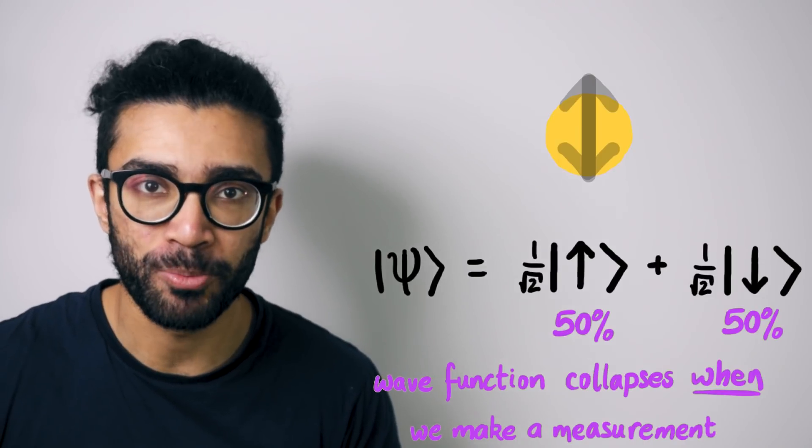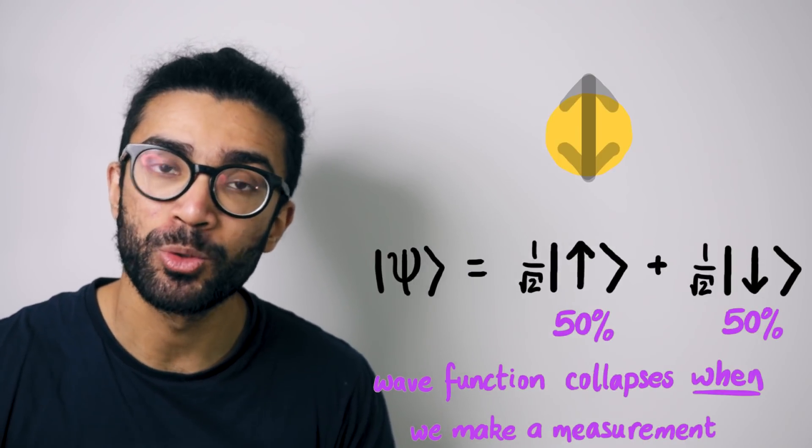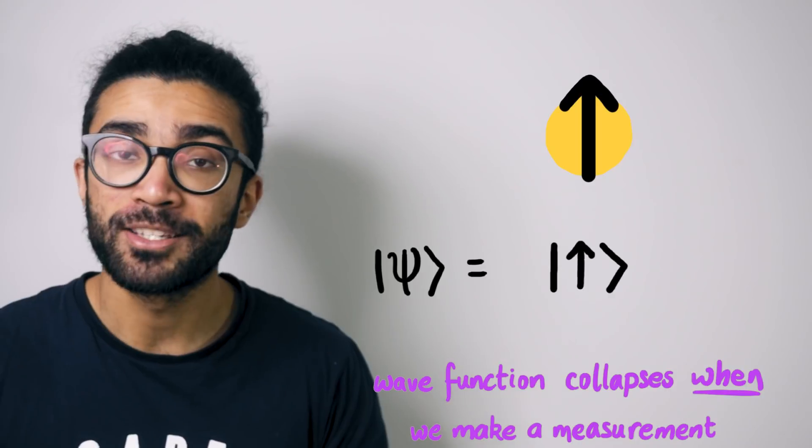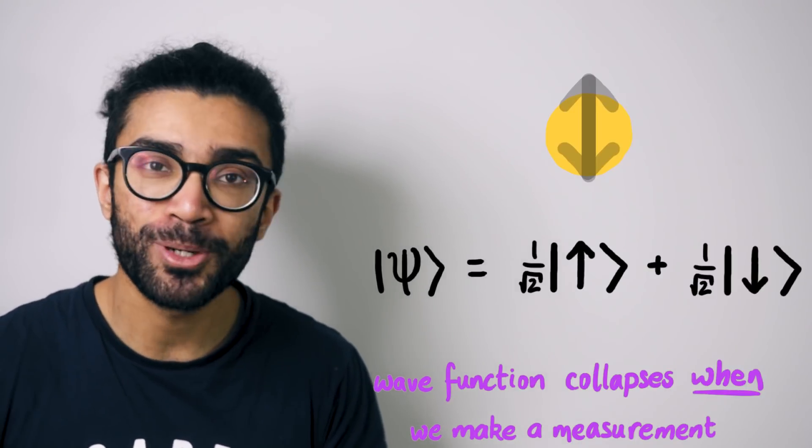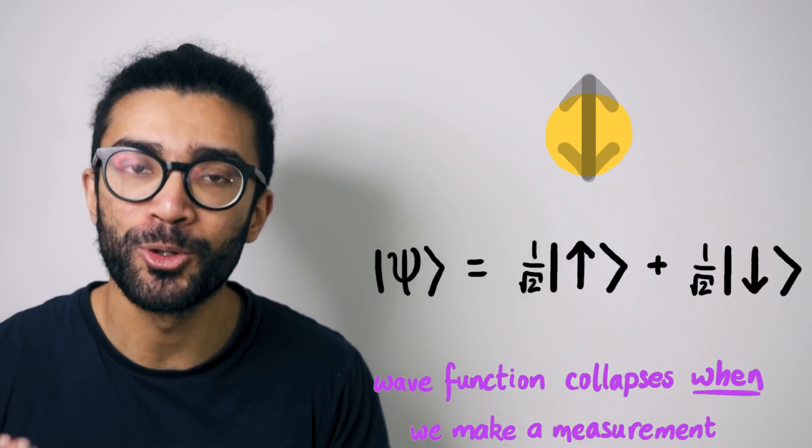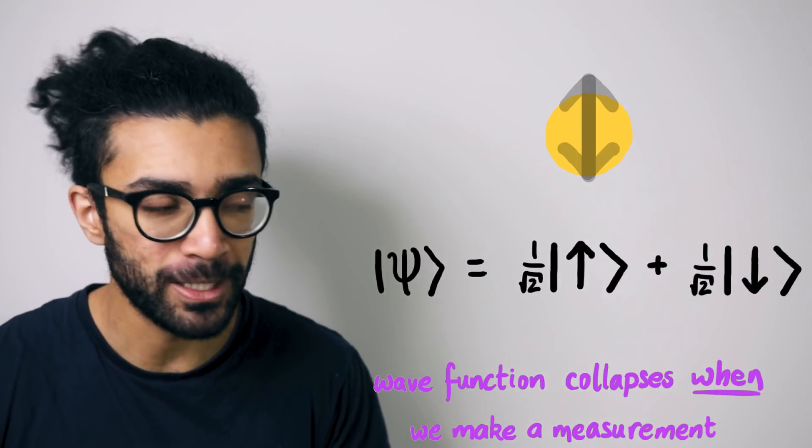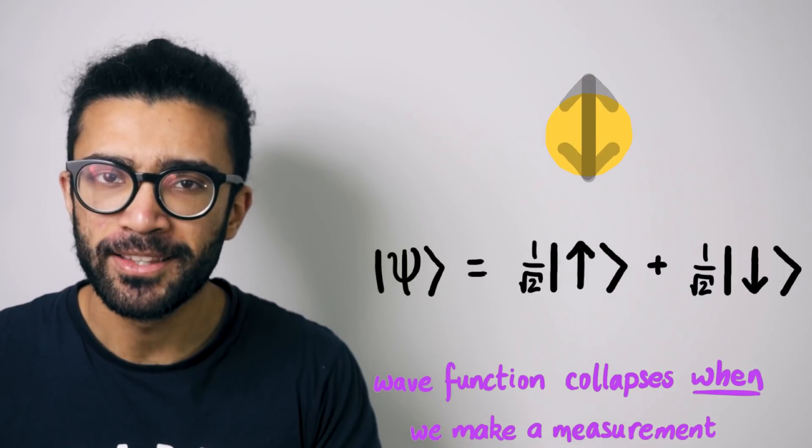When we measure a system in a superposed state, it collapses into one possibility. And hence, before measurement, this is literally all the information that can be known, not just all the information that we do know. It's not a lack of knowledge causing this issue. Now, here's the thing.